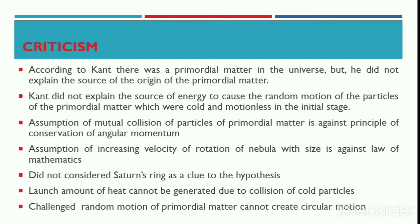The assumption of increasing velocity of rotation of the nebula with increasing size is also against the law of mathematics, as it is generally inversely proportional. Kant was not able to explain the source of energy that brought the random motion of the hard and cold primordial matter in the beginning. He was also not able to include Saturn's ring as an example or clue to support his hypothesis. Furthermore, a large amount of heat cannot be generated due to collision of cold particles of primordial matter.